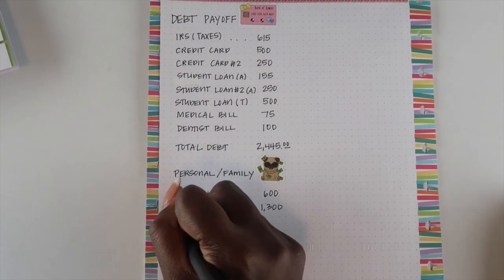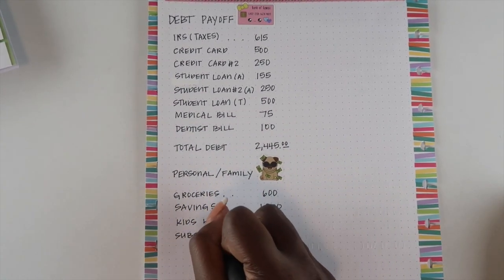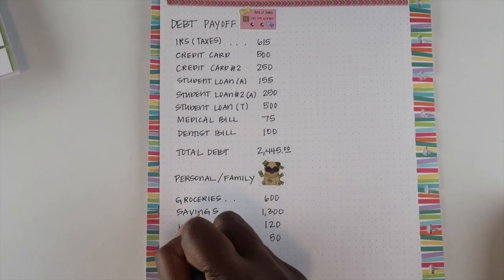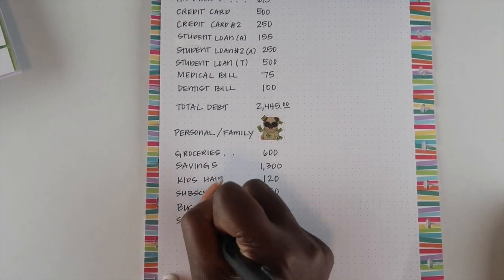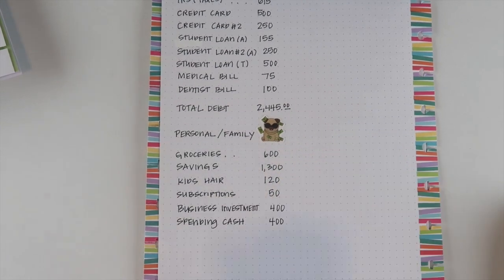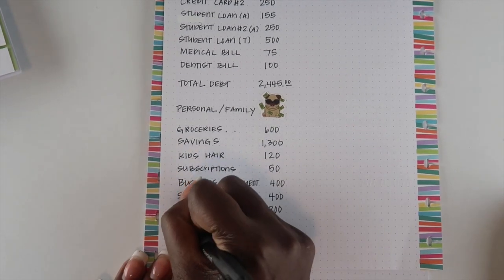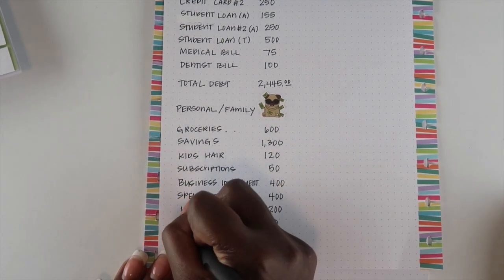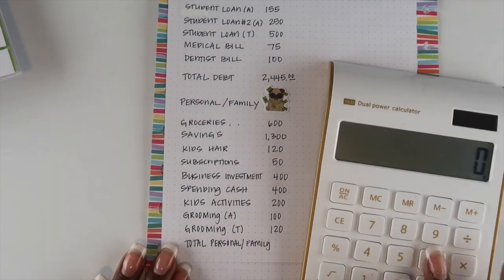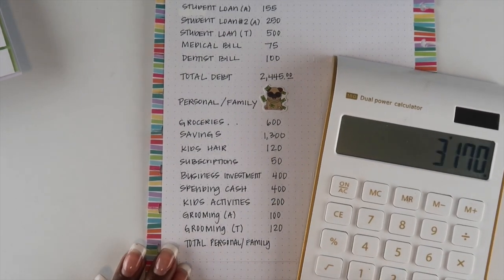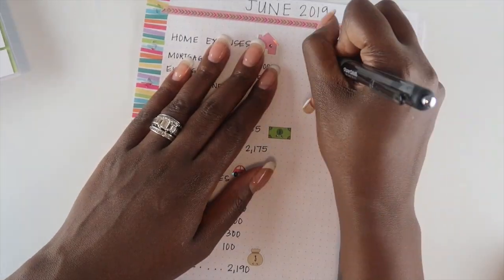The last category is my personal and family expenses: food — the grocery bill is about $150 a week; savings, with a goal of $1,300 for the month, which is about $325 a week; my kids' hair — I have two toddler girls who both go to the hairdresser; subscriptions; investment back into my sticker shop, about $100 a week; my kids' activities every week; and grooming for my husband and for myself, which includes hair supplies, nails, and different things like that.